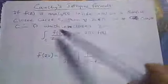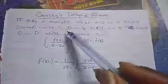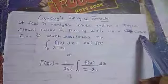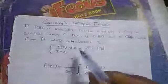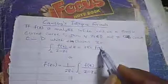Cauchy Integral Formula: If a function f is analytic inside and on a simple closed curve C, then for every z₀ in D and for every curve C in D that encloses z₀, the integral of f(z) over (z minus z₀) equals 2πi·f(z₀). This is what we call the Cauchy Integral Formula.